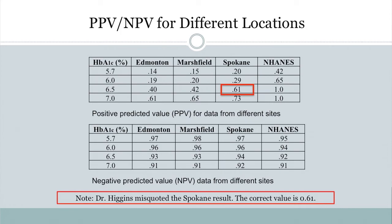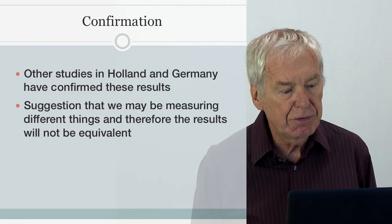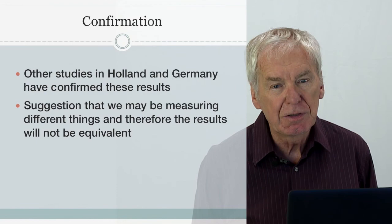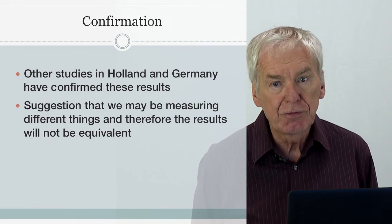The Marshfield community laboratory had a positive predictive value of 0.42, and Spokane (a mixed hospital and community setting) was a little better, around 0.61 — but none approached 1.0 for a positive predictive value at a threshold of 6.5%. However, when we looked at negative predictive values, hemoglobin A1c is a superb test for ruling out diabetes. It's good for ruling out diabetes, but not very good for ruling in diabetes. Studies published in Holland and Germany after we published confirmed these results, suggesting we may be measuring different things between A1c and the oral glucose tolerance test.